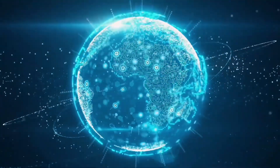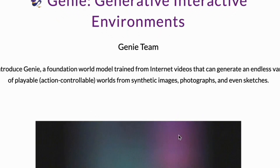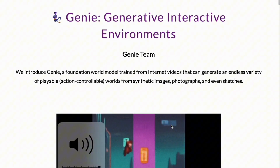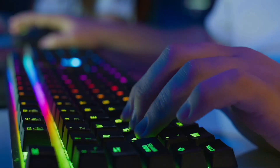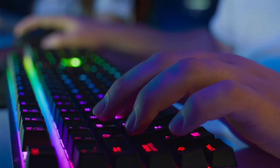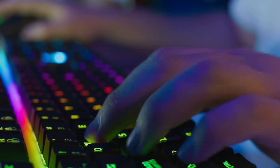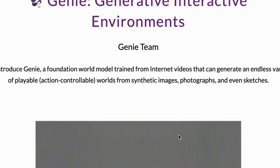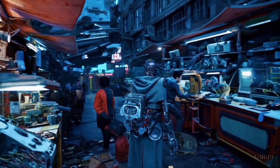Hey everyone. Genie is an artificial intelligence model that creates interactive worlds from images, whether they are computer-created, real photos, or even drawings. It all started with the advancement of generative AI, which now allows us to create new and unique content full of creativity using text, images, and videos. And now we're taking a step further with generative interactive environments, also known as Genie.